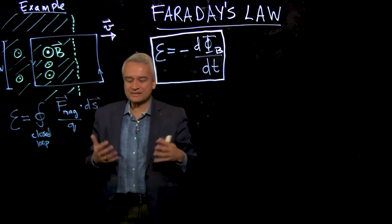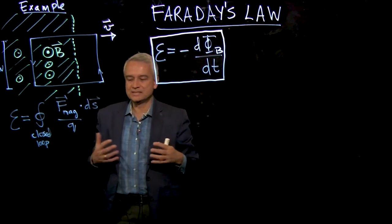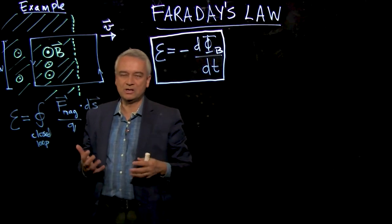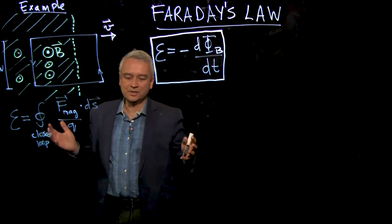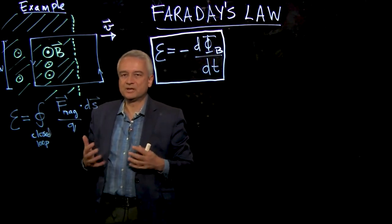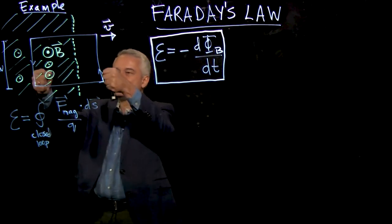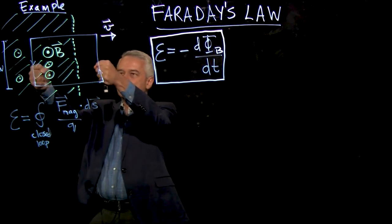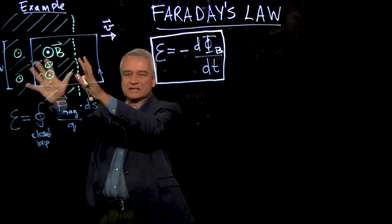And the reason why this kind of feels natural to us is that this is at the core of Einstein's theory of relativity. And even though you haven't yet learned Einstein's theory of relativity, this basic feature of relativity is that physics should be the same whether the loop is moving and the field is as it is, or the loop is fixed and the field is moving.